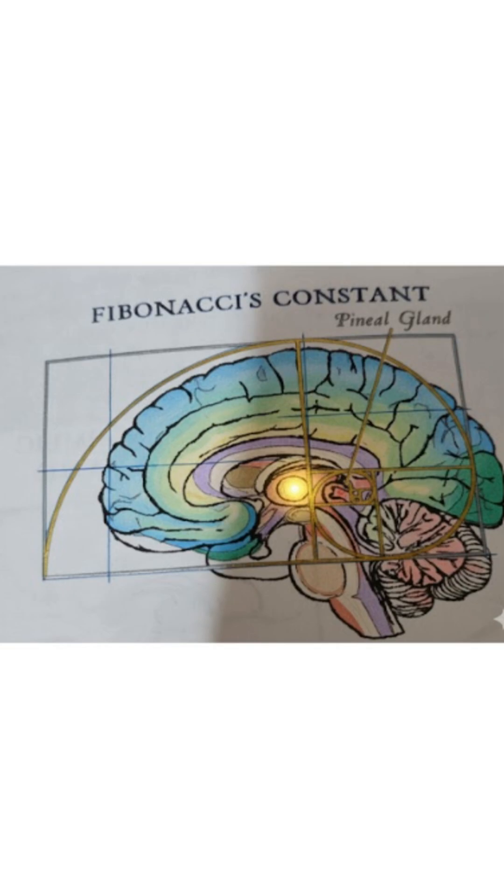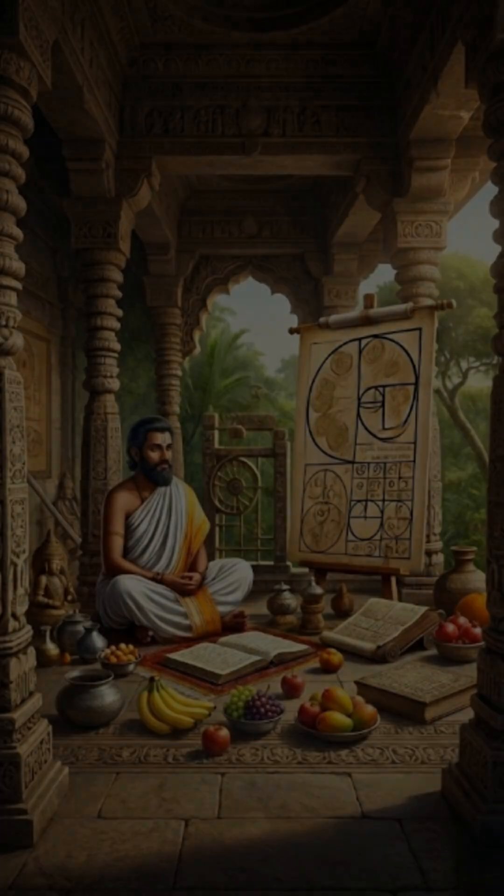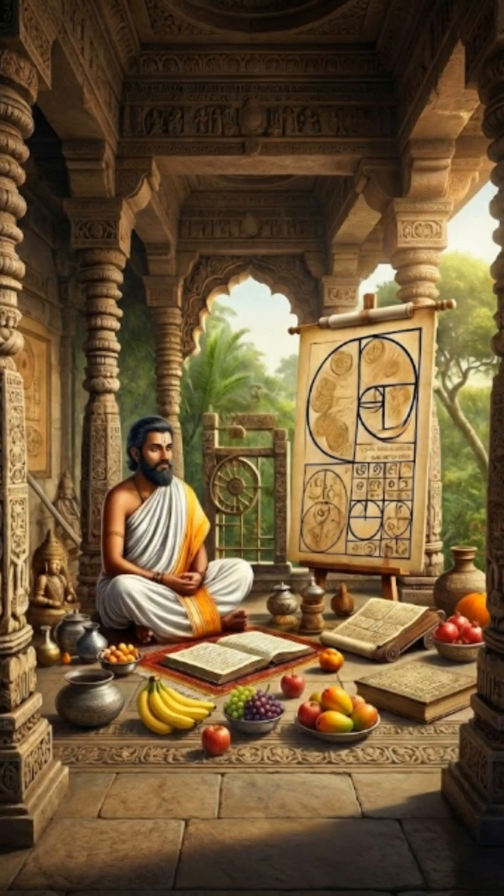The so-called Fibonacci constant, golden ratio, and its sequence weren't first discovered in Italy. They were born in India's study of poetry and mathematics, showing how deeply interconnected art and science were in ancient Indian thought.